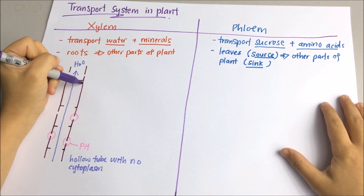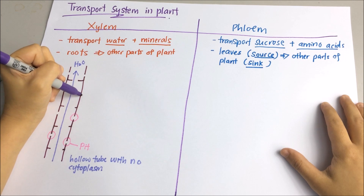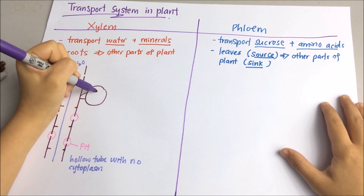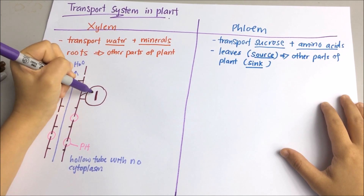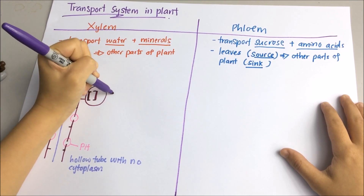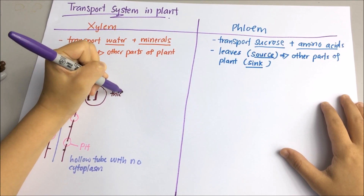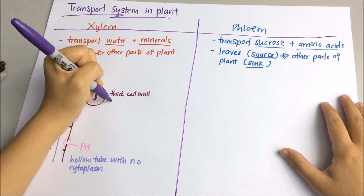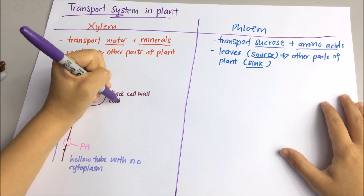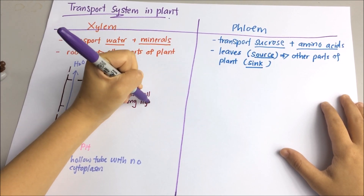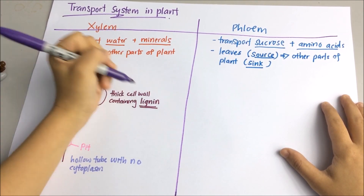Remember, xylem is very strong — it has a tough cell wall containing a woody material called lignin. Because of this lignin, xylem also functions to provide mechanical support to the plant.